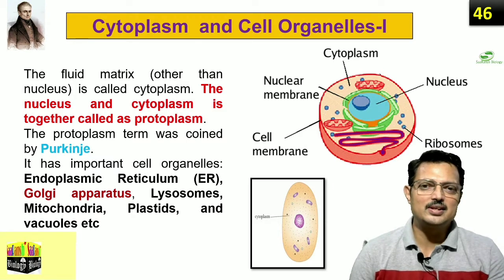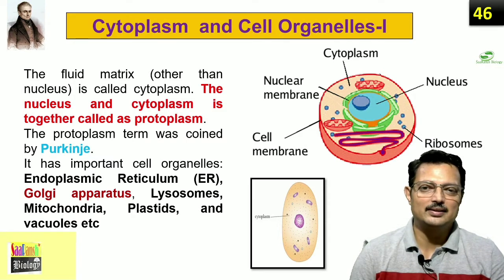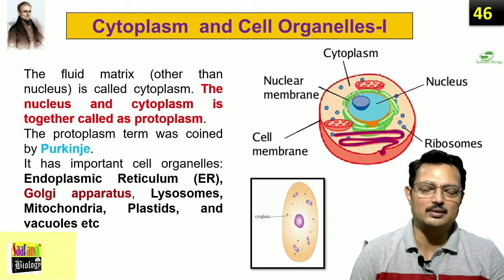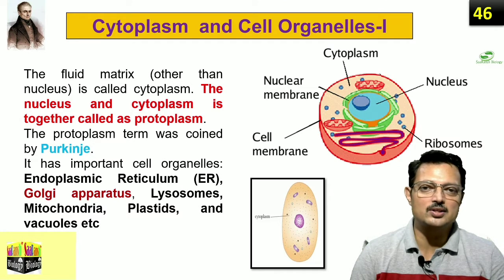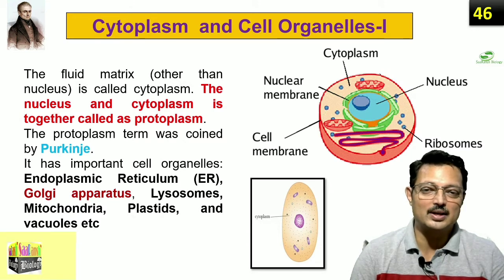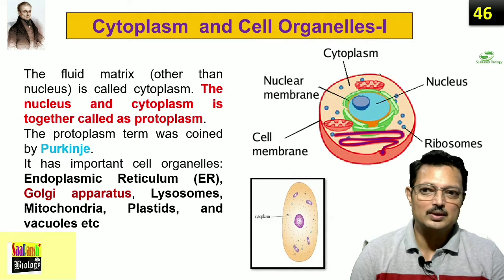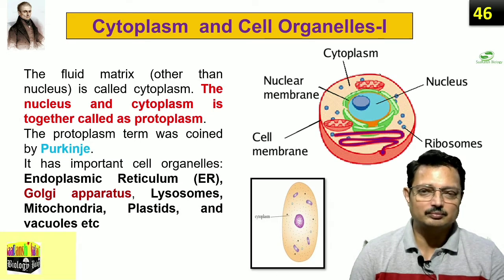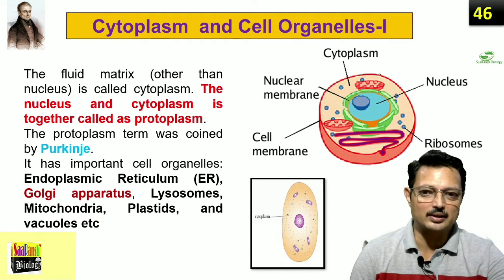When we see a cell, we find that the outermost covering is called the plasma membrane. There is a structure generally in the center of the cell called the nucleus. In between, there is a fluid or jelly-like substance which holds most of the cell organelles — that is called the cytoplasm. That matrix holds all the organelles together.